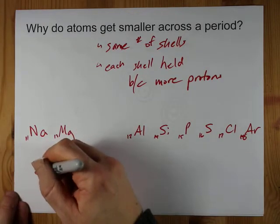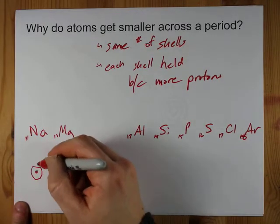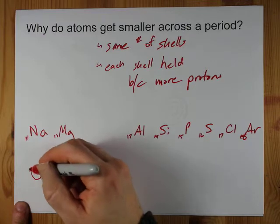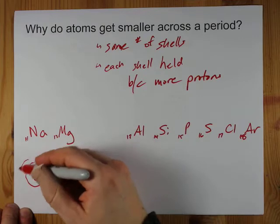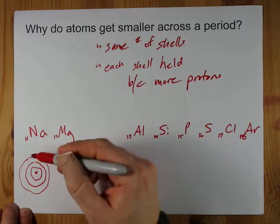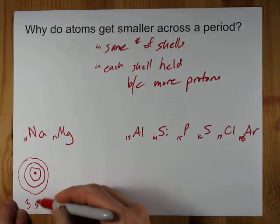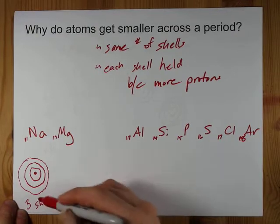Sodium has its nucleus, and then it has two electrons in the first shell, eight electrons in the second shell, and one electron in the third shell. So it's three shells that are occupied in sodium.